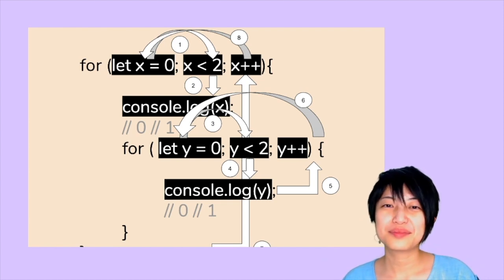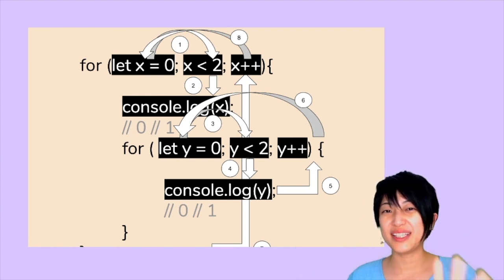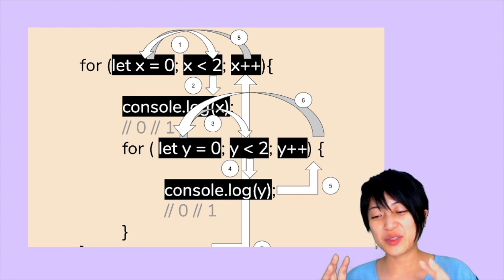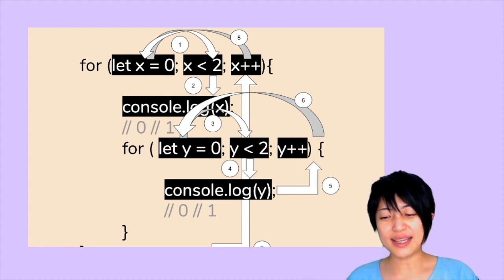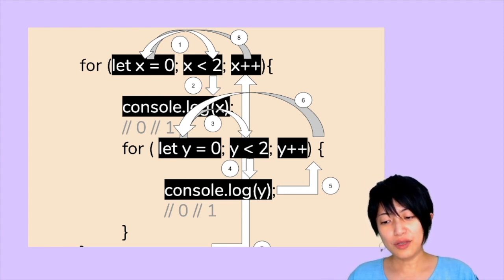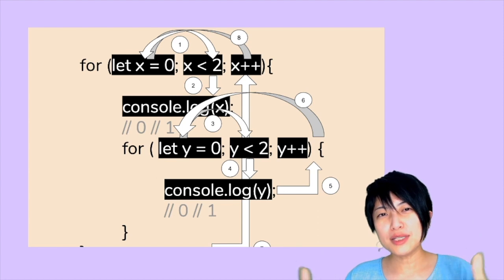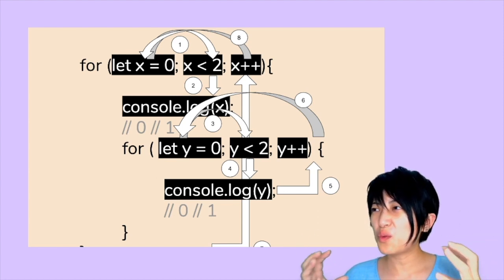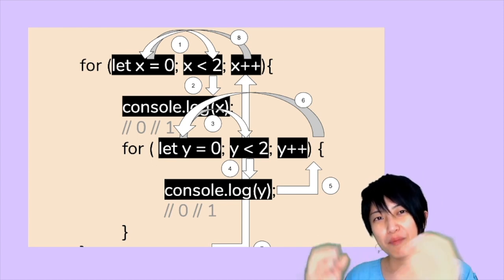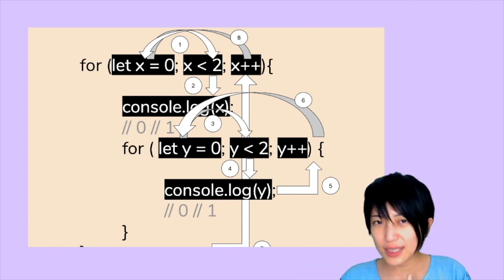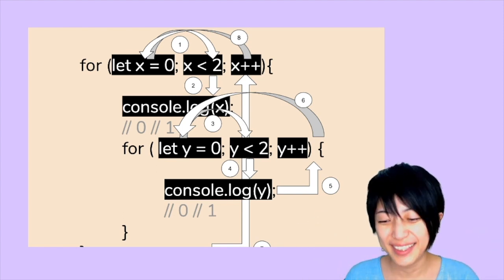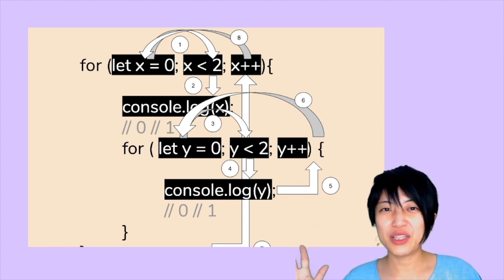Now x is equal to 1 and it returns to meet the inner for loop as if it has never met it before. Remember: what happens inside a for loop stays within that for loop — whatever is executed and memorized inside it gets reset once it exits. It's ground zero again.